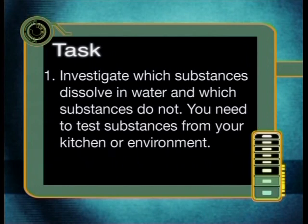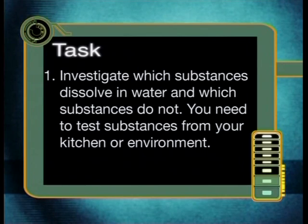Here is your task for today: investigate which substances dissolve in water and which do not. Test substances from your kitchen or environment, and try to categorize what kinds of things dissolve in water and what things do not. Once you have conducted your investigation, write a report discussing your method and results. See if you can explain why water is able to dissolve substances like table salt but not chalk by referring to the microscopic model of matter. Join me for the next lesson when we will look at chemical changes taking place as part of the water cycle. Goodbye.